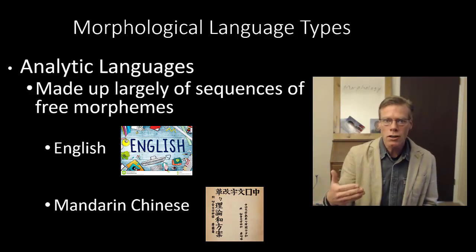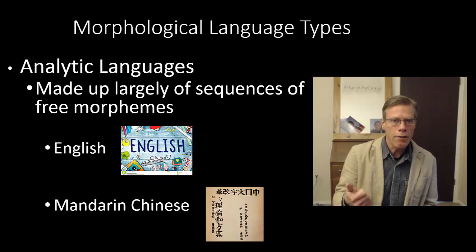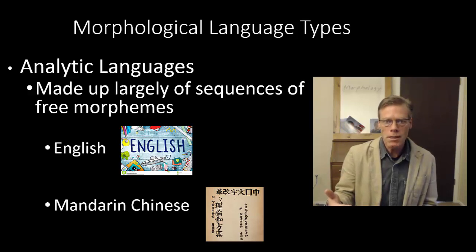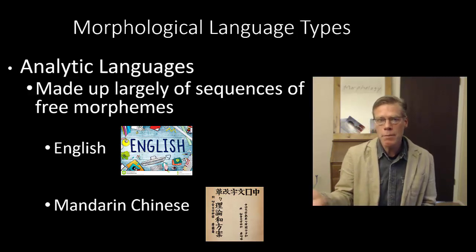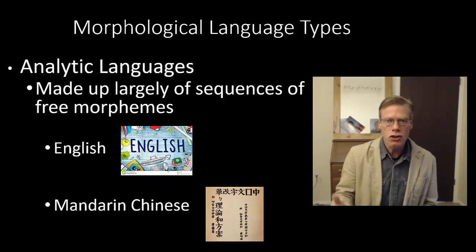That's not to say that there aren't affixes. For example, in English, which is considered an analytic language, certainly we have plenty of prefixes and suffixes, but relatively speaking, there are a large number of free morphemes in the language. Mandarin Chinese might be an even better exemplar of analytic languages, where there are few bound morphemes.